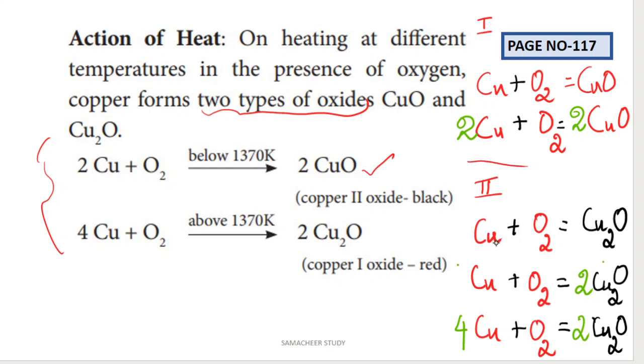Now above 1370: 4Cu plus O2 above 1370 gives Cu2O. That is copper 1 oxide. Here is two oxygen and here is one oxygen. So for this oxygen balance, we add two. First we balance the oxygen. So we add two. If we add two, we get two times two equals four copper. So we add 4Cu. So 4Cu plus O2 equals 2Cu2O. This is the balancing equation, students.